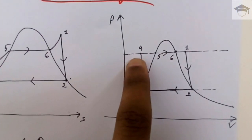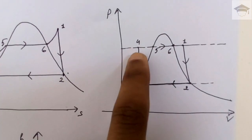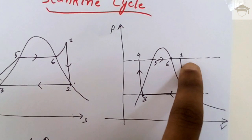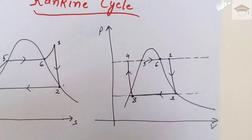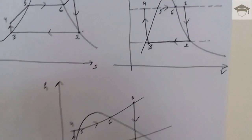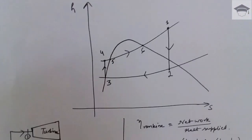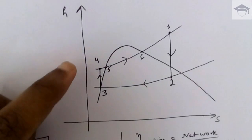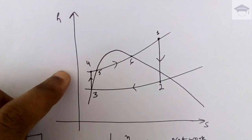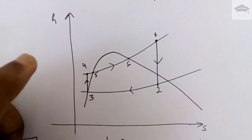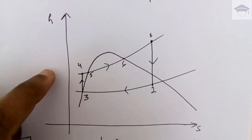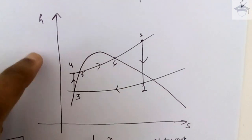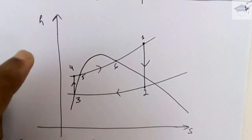Now the HS diagram — generally while solving numerical examples we use the HS diagram because it directly represents enthalpy, so we can directly find the work and the corresponding efficiency. The HS diagram shows two pressure lines: one is the condenser pressure line and the other is the boiler pressure line.